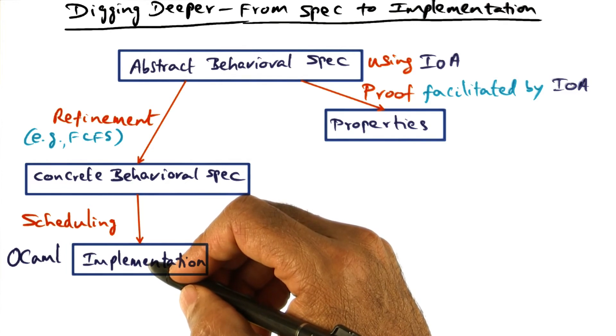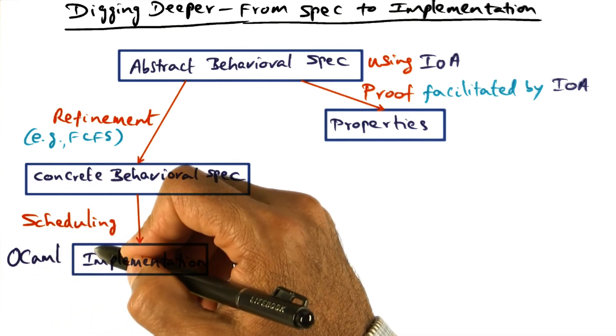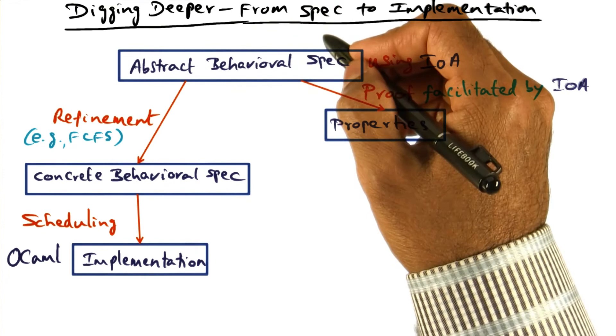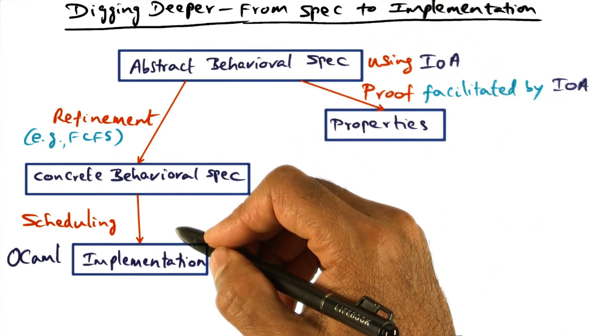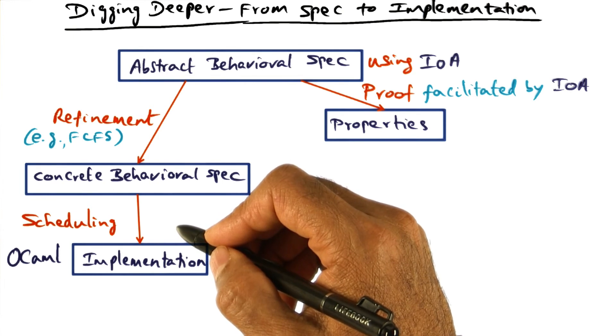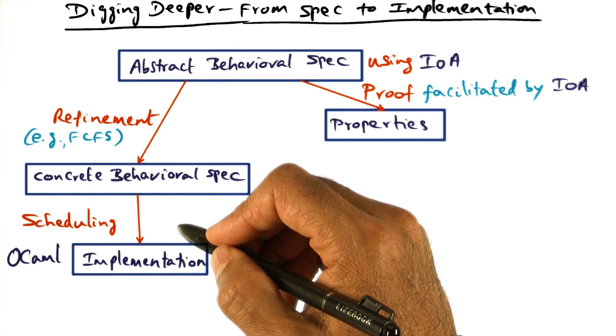This is very important because we are building a complex system from a specification using a component based design approach, which means we're going to take these components and mesh them together just like you take Lego blocks to build a toy.